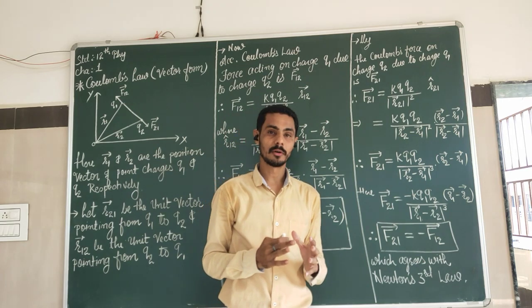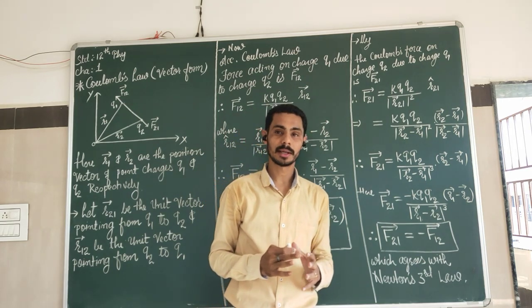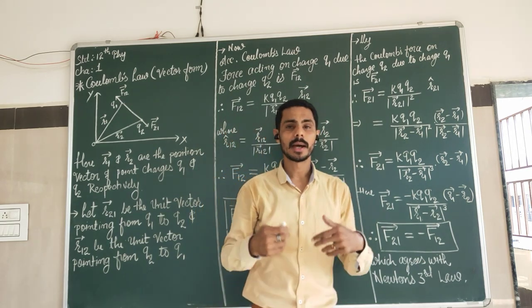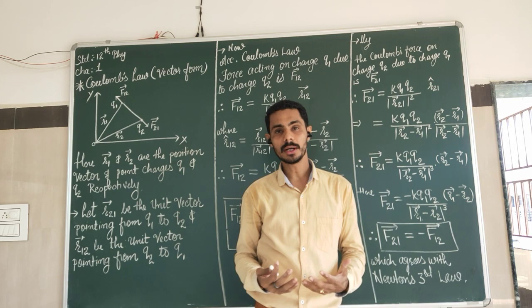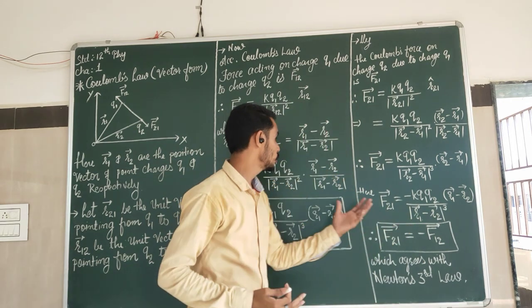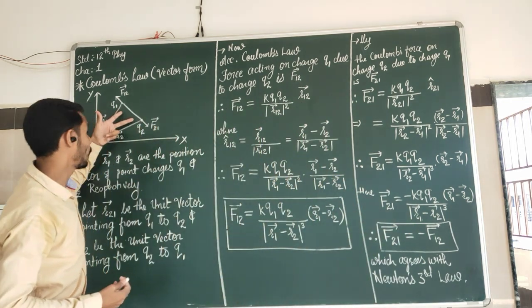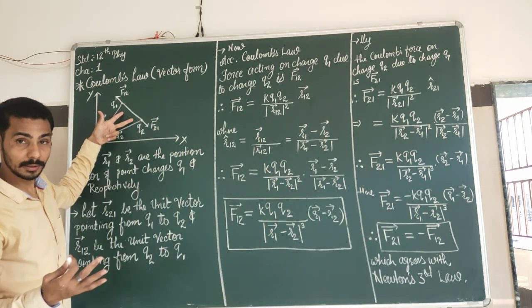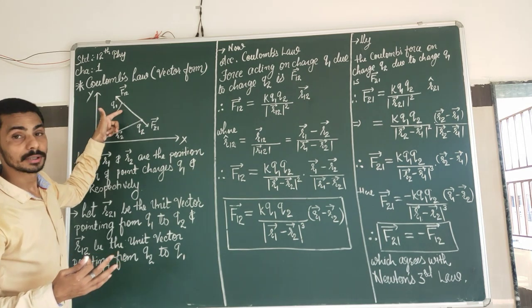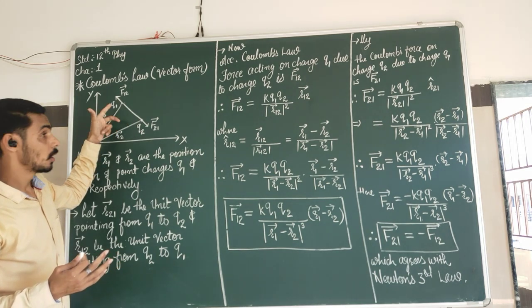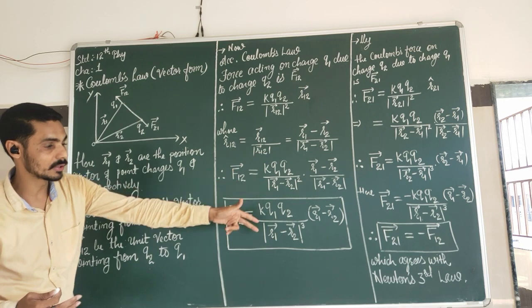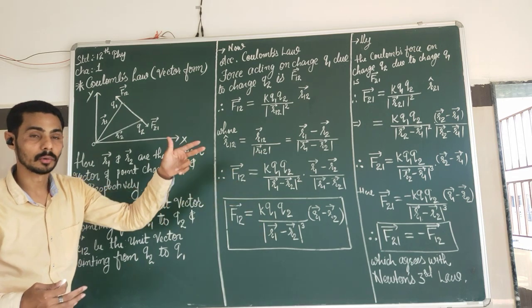This is Newton's Third Law of motion: action and reaction are equal in magnitude and opposite in direction. So these two charges exert the same amount of force on each other but in opposite directions, which agrees with Newton's Third Law.